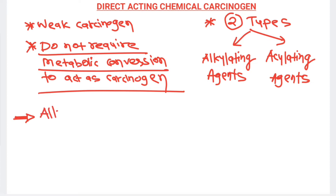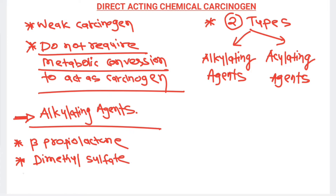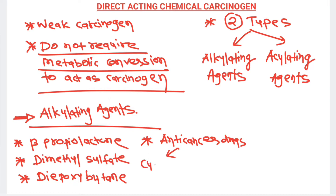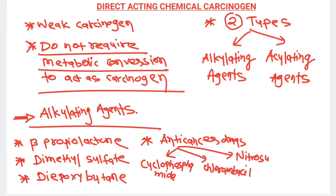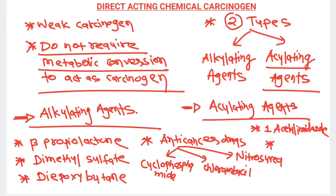Examples of alkylating agents include beta-propiolactone, dimethyl sulfate, epoxy butane, and anti-cancer drugs such as cyclophosphamide, chlorambucil, and nitrous urea. These anti-cancer drugs can also cause cancer. The common examples of acylating agents are one-acetyl imidazole and dimethyl carbamoyl chloride.